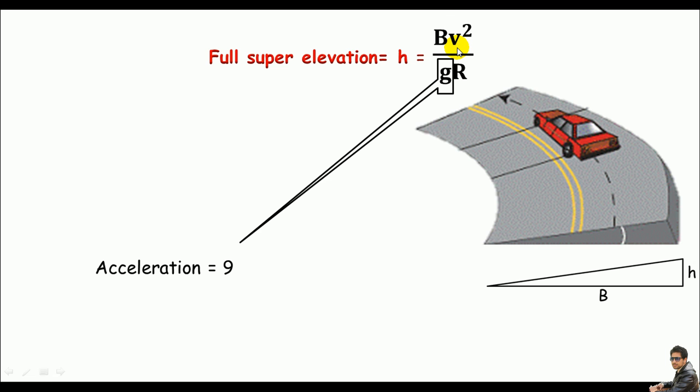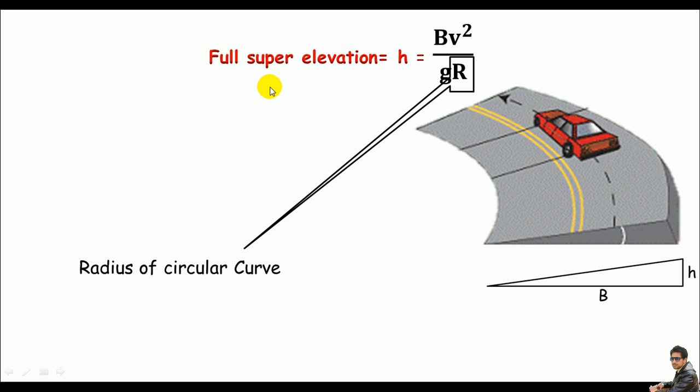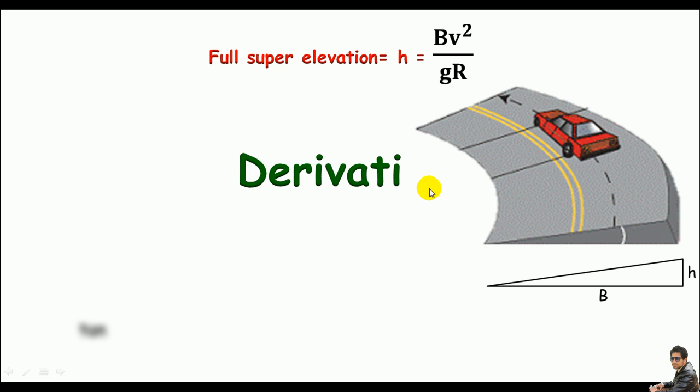vehicle, g is acceleration which is 9.8 meters per square second, and R represents the radius of the circular curve. The full super elevation is always at the apex of the circular curve. Now let's come straight into the derivation.